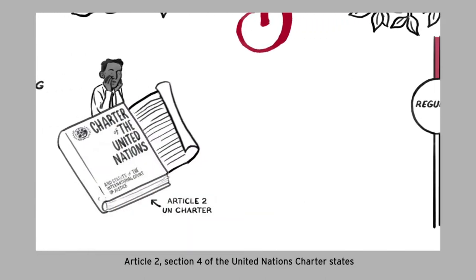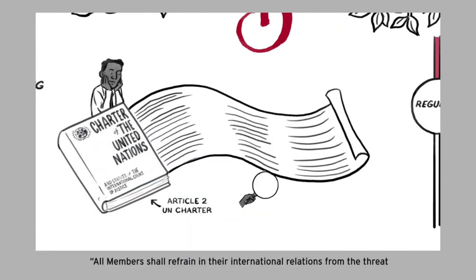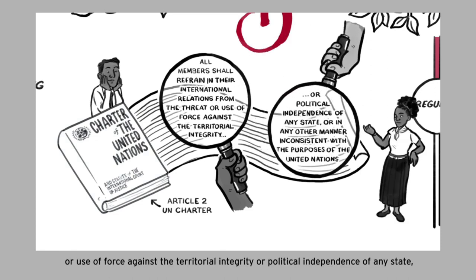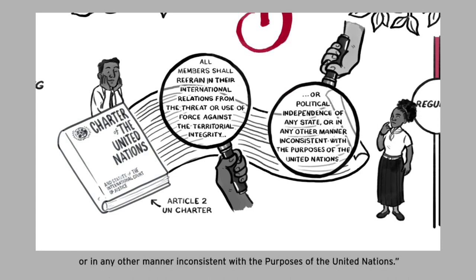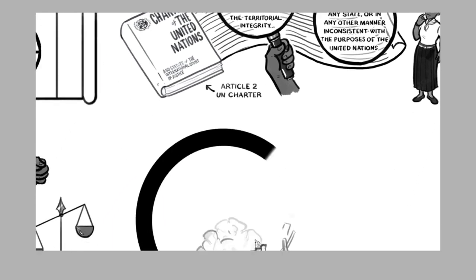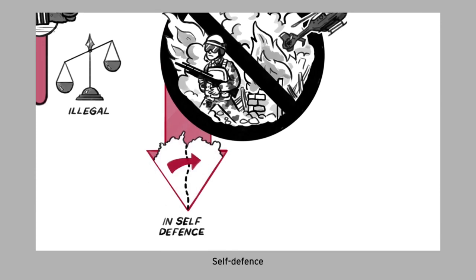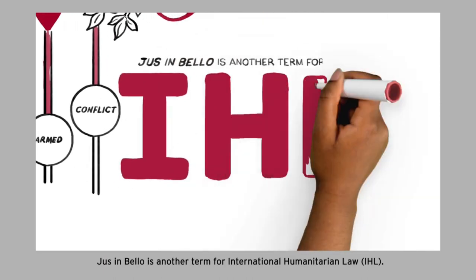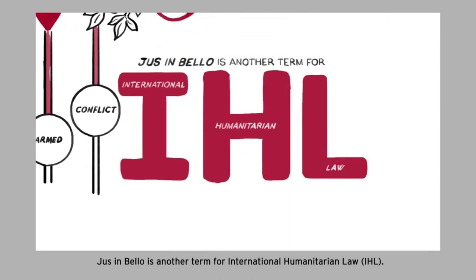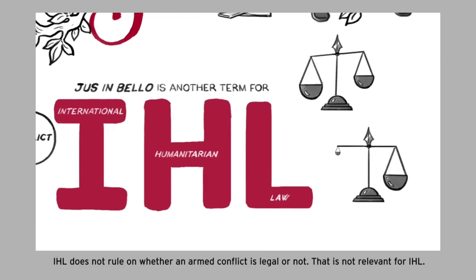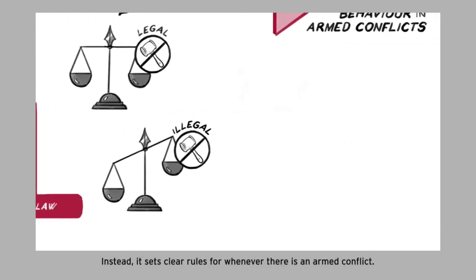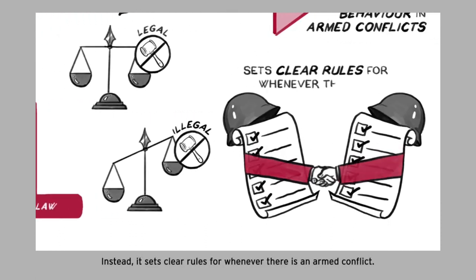Jus ad bellum is another term for the international law regulating the resort to force by states. This law determines whether such use of force is legal or not. Article 2, Section 4 of the United Nations Charter states: 'All members shall refrain in their international relations from the threat or use of force against the territorial integrity or political independence of any state, or in any other manner inconsistent with the purposes of the United Nations.' Exceptions to this prohibition are self-defense and authorization by the UN Security Council. Jus in bello is another term for international humanitarian law — IHL. IHL does not rule on whether an armed conflict is legal or not; instead, it sets clear rules for whenever there is an armed conflict.